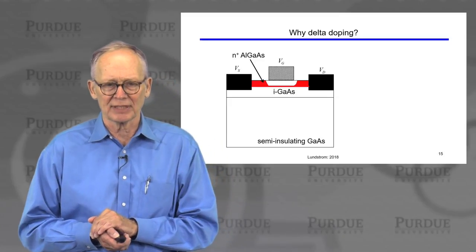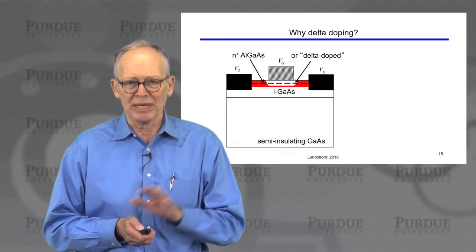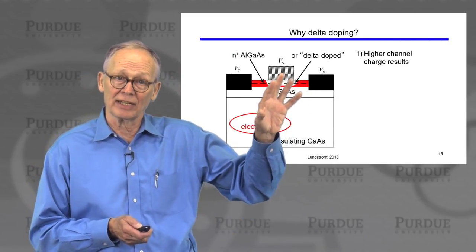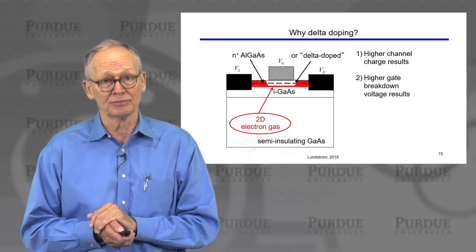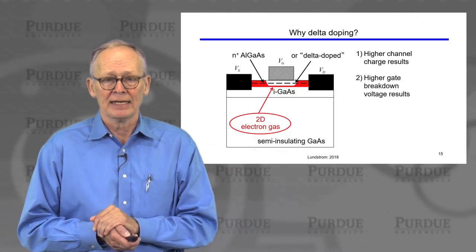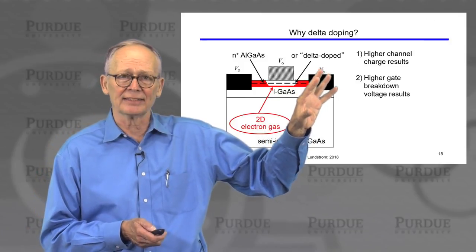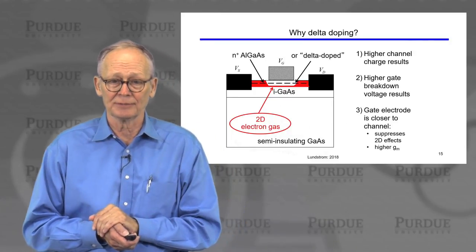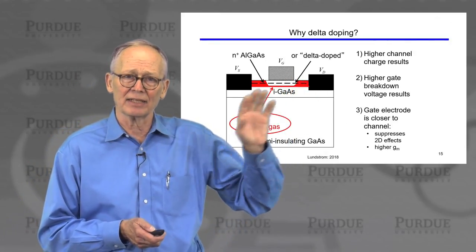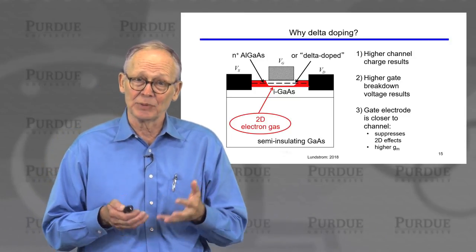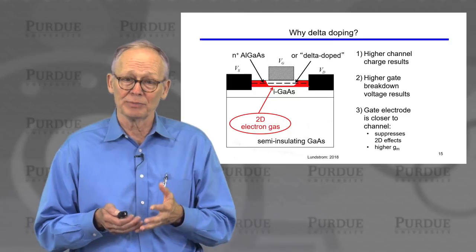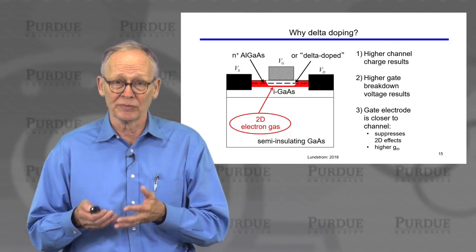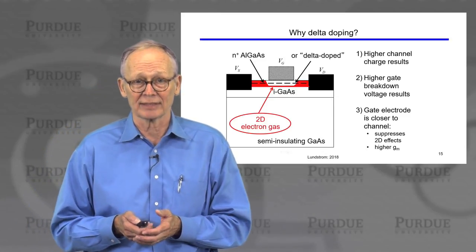Delta doping offers several benefits. Done correctly, it can yield higher channel charge by introducing many dopants in a single atomic plane. It also modifies the electric field in a way that increases gate electrode breakdown voltage and allows the gate to be placed closer to the channel. As we know from MOSFETs, a shorter gate-to-channel distance suppresses two-dimensional electrostatic effects and gives greater gate control over channel charge, resulting in higher transconductance.